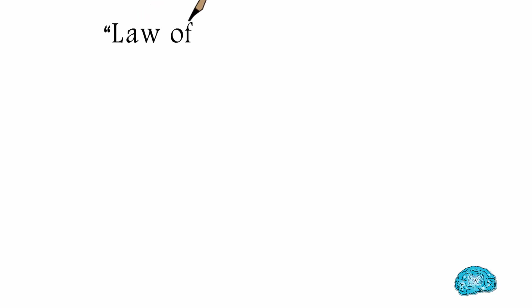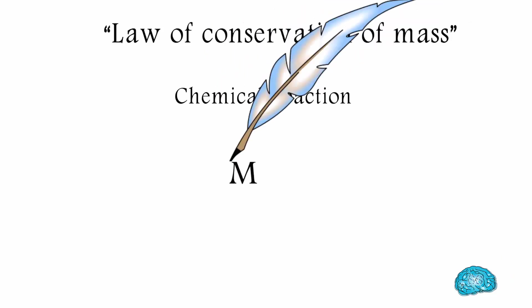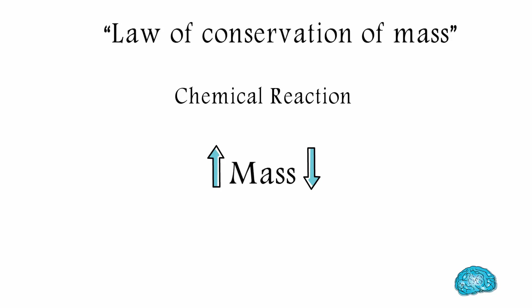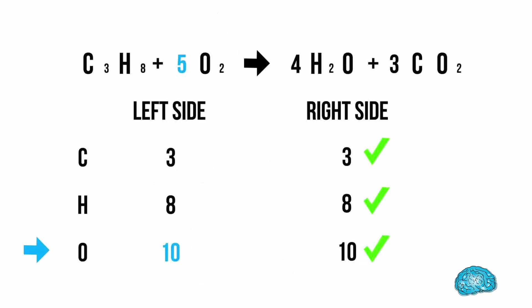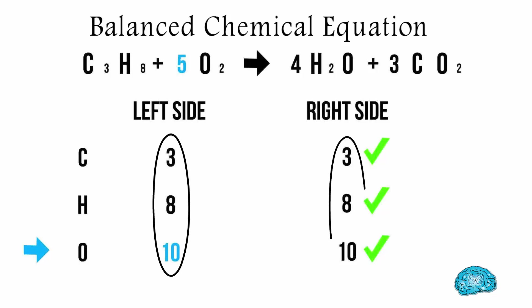In chemistry, there is something called the law of conservation of mass. This simply states that during a chemical reaction, mass can neither be created nor destroyed. It is converted from one form to another. The mass of the products in a chemical reaction must be equal to the mass of the reactants. That is why we always write balanced chemical equations, which means number of atoms before reaction should always be equal to the number of atoms after the reaction.